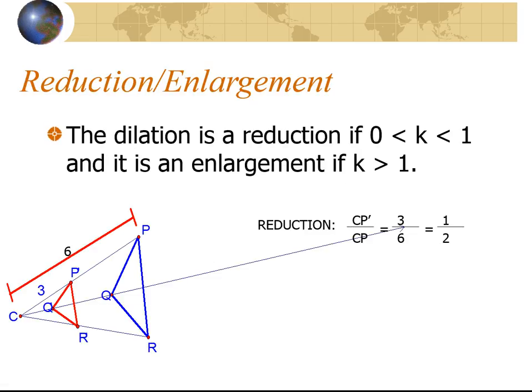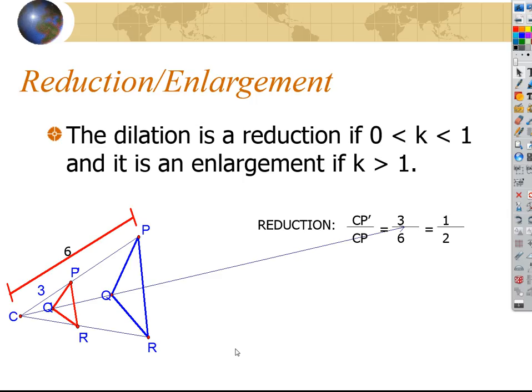Here's an example. The blue ones will always be the pre-images and the red will always be the images after the dilation. So with this one here, we've pointed our zoom lens right there — that's the center. C is going to be the center of the zoom. We started off with the blue triangle before we zoomed, and then that's what we ended up with. Did we zoom out or zoom in? We actually zoomed out, because everything got smaller.